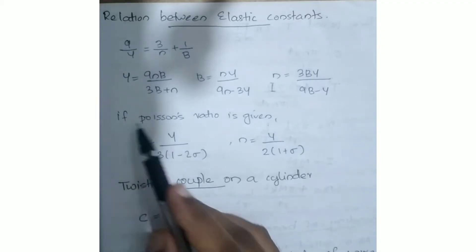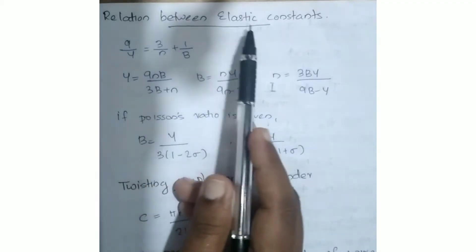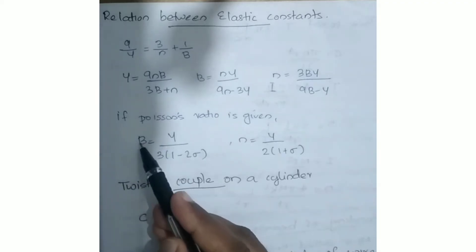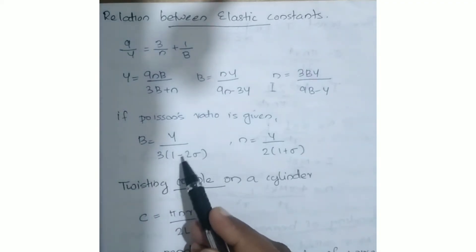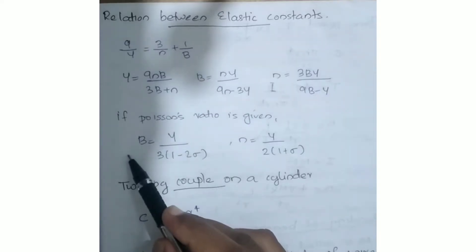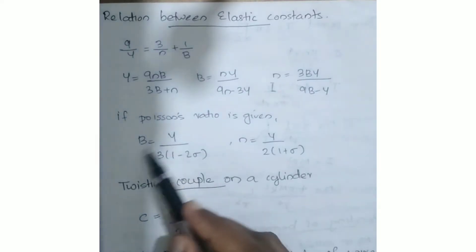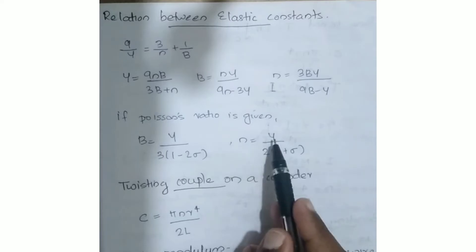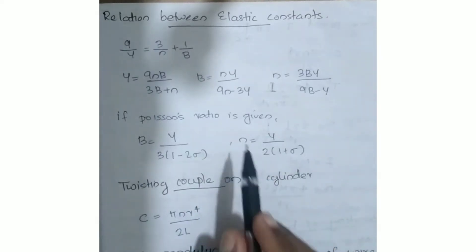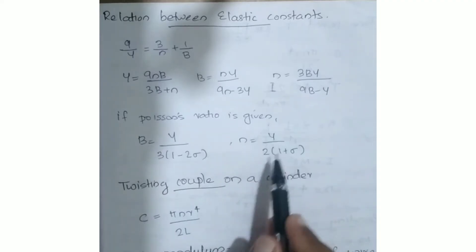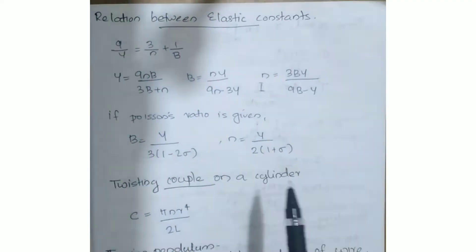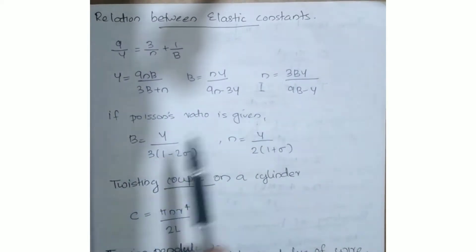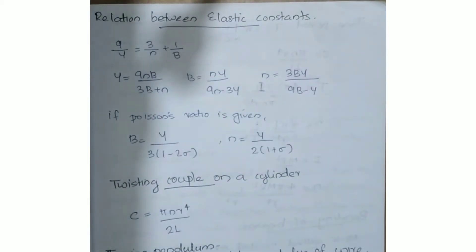Next, we will learn the Poisson's ratio relations with elastic constants. Bulk modulus b is equal to Y divided by 3 times 1 minus 2 sigma. Rigidity modulus n is equal to Y divided by 2 times 1 plus sigma. These equations relate bulk modulus, Young's modulus, rigidity modulus, and Poisson's ratio sigma.